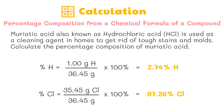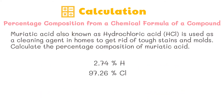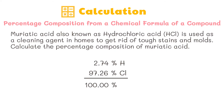Percentage of chlorine equals 35.45 grams chlorine over 36.45 grams times 100 percent, equals 97.26 percent chlorine. Step 3: review your result — it should total to 100 percent. 2.74 percent hydrogen plus 97.26 percent chlorine equals 100 percent. Therefore, hydrochloric acid is 2.74 percent hydrogen and 97.26 percent chlorine.